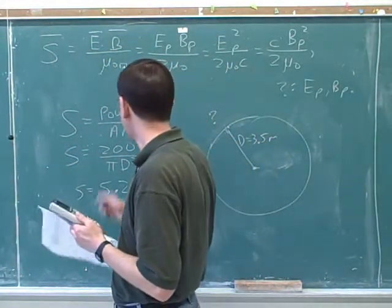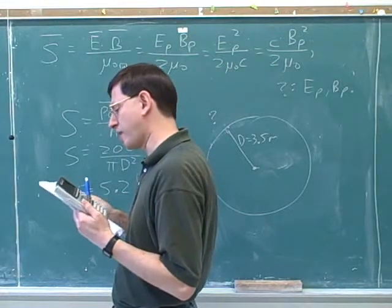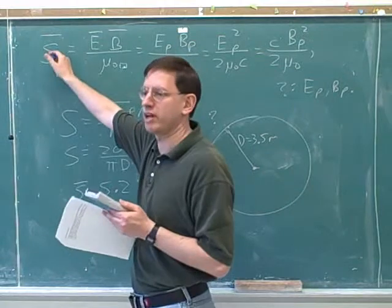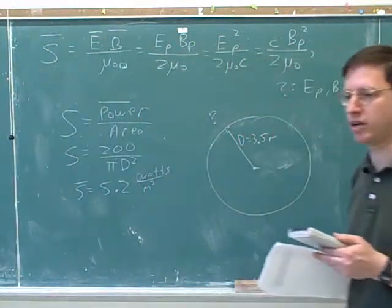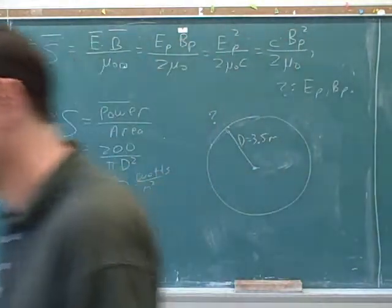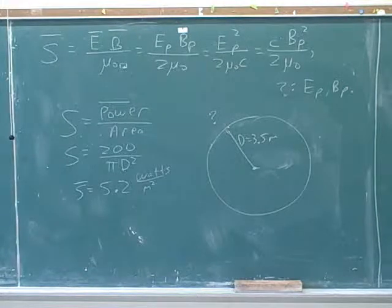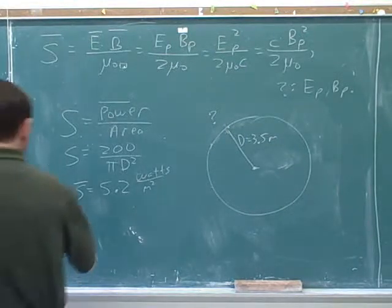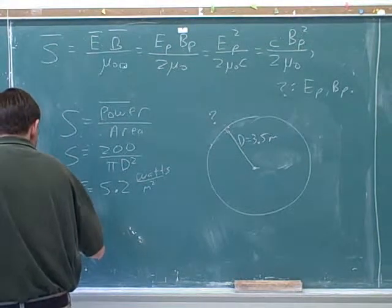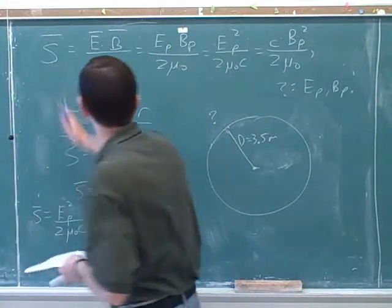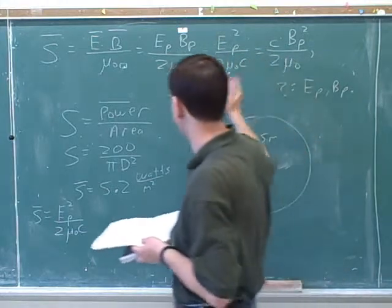Notice that the problem specifically said this is average power — there was an average power output of 800. That tells us that this is an average intensity, which is exactly what we want to plug into this formula. We have to pay close attention to when things are called averages versus maximums to make sure we're using the right formulas. We'll use intensity equals dp squared over 2 mu-zero c.